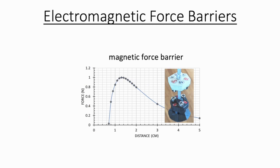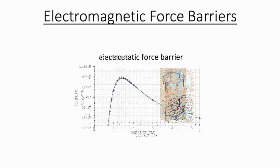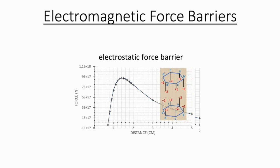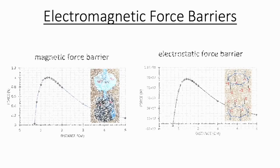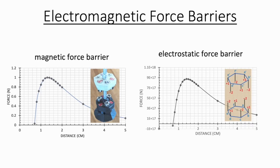With that in mind, it should come as no surprise that the shape of the magnetic force barrier curve is quite similar to an analogous electrostatic force barrier curve, in which double north and single south magnets are replaced with double negative and single positive charge, and the essential geometry has been preserved.